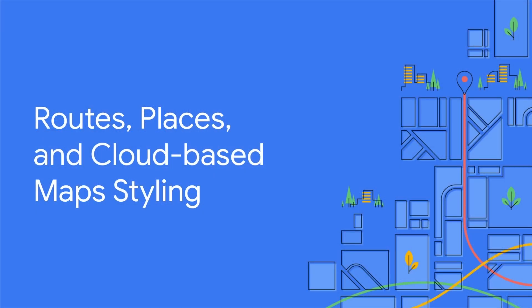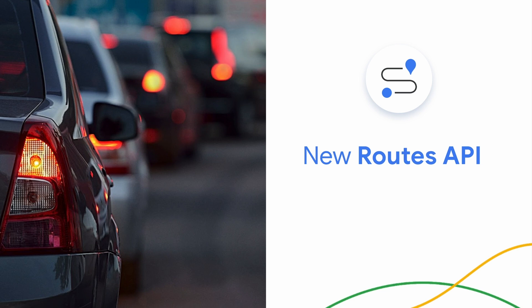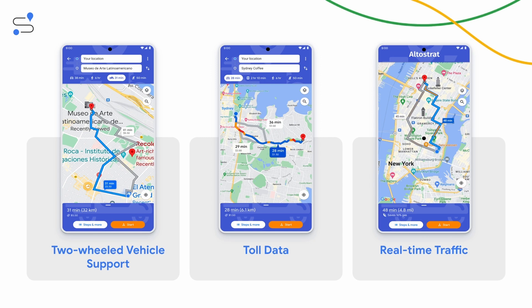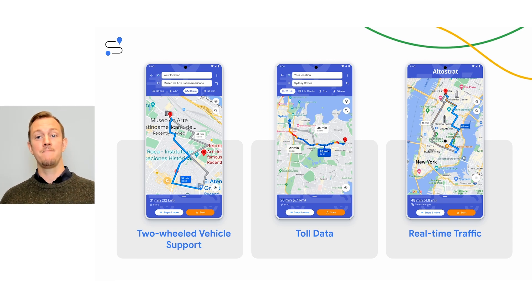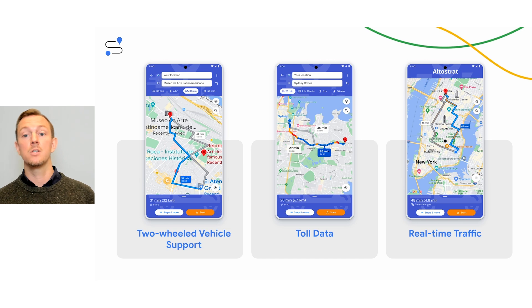Now let's talk about some improvements we've made to some of our most used products and capabilities: routes, places, and cloud-based map styling. Last May, we announced the general availability of our new Routes API, an enhanced version of the directions and distance matrix APIs that combines both of these into a single service. Routes API enables you to provide more informative and flexible routes for your users. In addition to new features such as two-wheeled vehicle routing and improved ETA accuracy, the Routes API provides improved performance for calculating directions, distance, and travel time. This makes it worthwhile to implement the new Routes API into apps that currently use distance matrix or directions APIs.